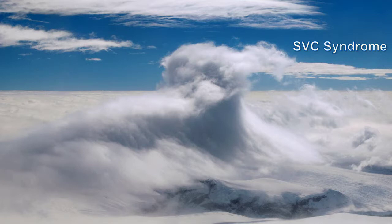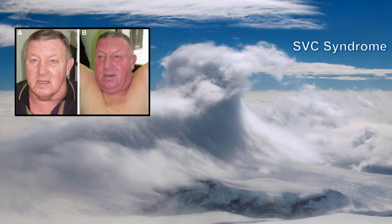SVC obstruction can occur acutely or subacutely, either from a solid tumor or SVC thrombus. An increasingly prevalent cause is intravascular devices like pacemakers or PICC lines. It's important to keep in mind because it may present with subtle symptoms — just a puffy face, facial redness, dyspnea, or arm swelling. But it's important to recognize because it can lead to serious complications such as airway compromise and cerebral edema. You may remember Pemberton's sign from med school: facial redness on elevation of the arms. Dilated superficial veins above the neck can also be seen, though these usually occur with more subacute occlusions.